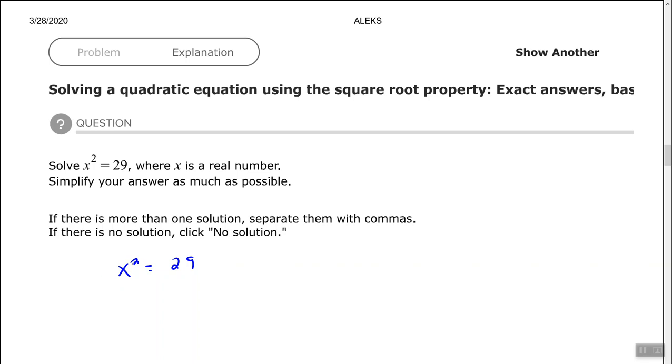To solve this, I need to undo the x squared by taking the square root of each side. Don't forget the positive negative case. In this case, x equals—we're going to follow the instructions and separate by comma—negative square root of 29 and positive square root of 29.